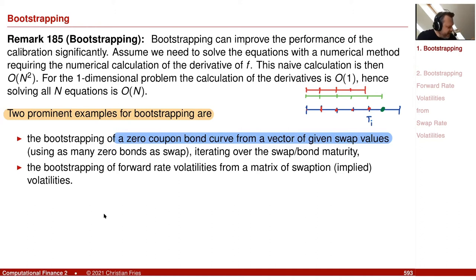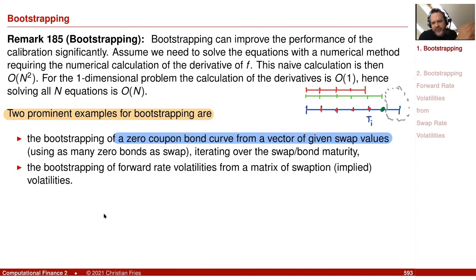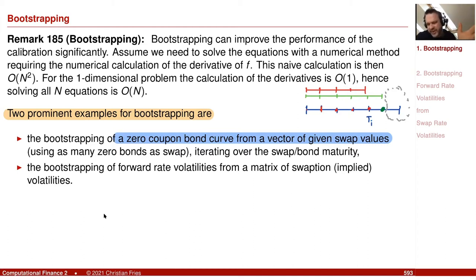This only works if future values do not influence earlier ones — that's only true if the curve is defined without interdependence. For example, if you have spline interpolation or polynomial interpolation, the value in between can depend on other values, and then this does not hold. So you have to be careful that your model has this property.